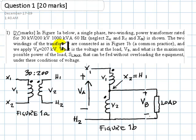Let's read this question. In figure 1A below, a single phase, two winding, power transformer is rated for 30 kV, 200 kV